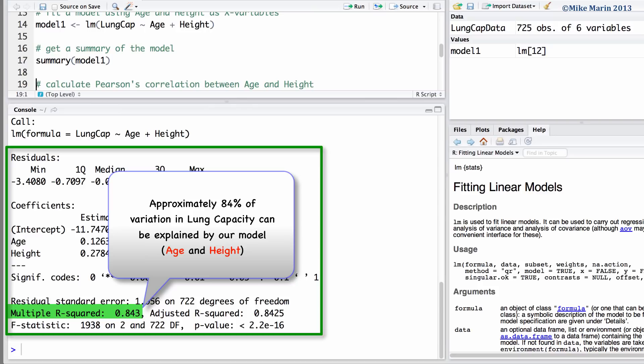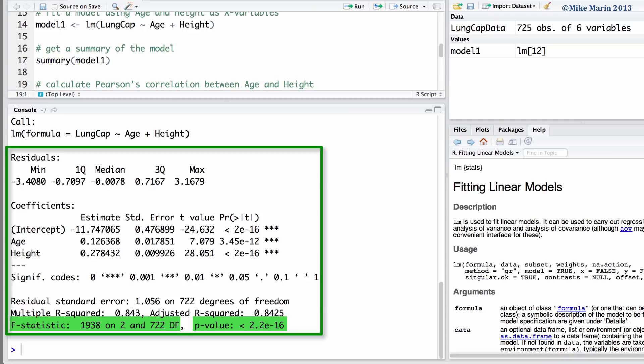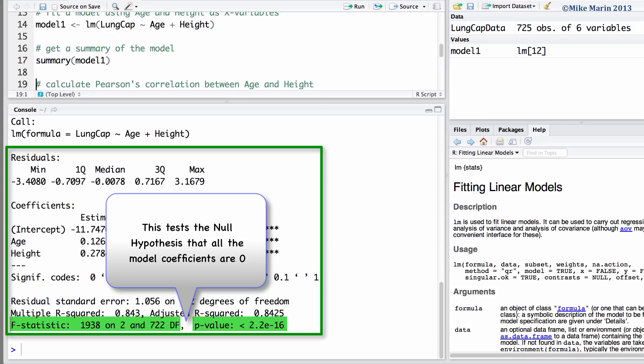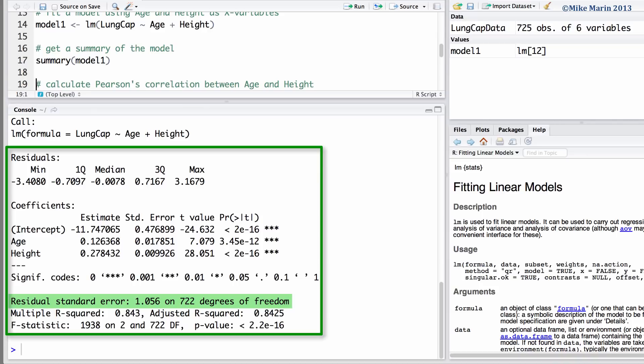Approximately 84% of variation in lung capacity can be explained by our model. That is, can be explained by age and height. Here, we can see the F-statistic and P-value for an overall test of significance of our model. This tests the null hypothesis that all of the model coefficients are 0. In our example here, it tests specifically that the slope for age and height are 0.